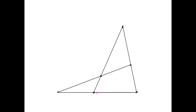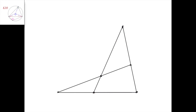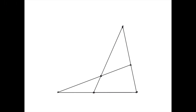Now suppose that this is a quadrilateral, and we continue its sides until they intersect — for example, here and here — giving us four triangles. The circumcircles of all four triangles always pass through one point, somewhere in this region. It's called the Miquel point of the quadrilateral.